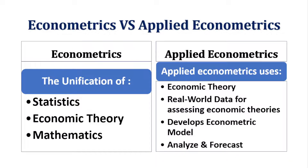Econometrics is a unification of three things: statistics, economic theory, and mathematics. So when you unify these three you get econometrics. But in the case of applied econometrics, you are using these same three tools but with real world data — data which assesses economic theory in real settings and real environments. On the basis of this real world data and economic theory, the researcher develops econometric models, and on the basis of these models you analyze and forecast.